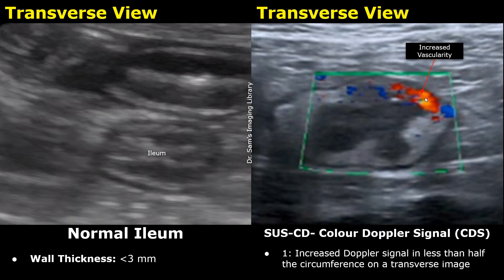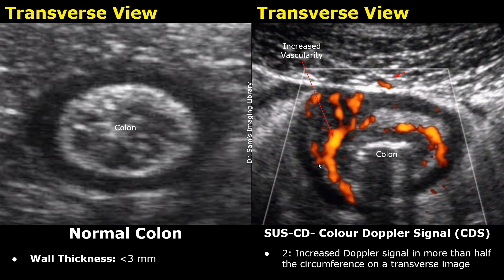The second parameter is the color Doppler signal. A score of 1 is given if the color Doppler signal is seen in less than half the circumference of the bowel loop on the transverse image. For example, if Doppler signals are only seen in the upper half of the circumference, that is less than half, so one point is given. Two points are given for increased Doppler signal in more than half the circumference on a transverse image.